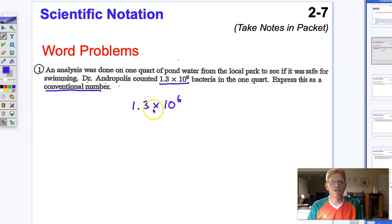So 1.3 × 10⁶. Now, you'll remember that's just expanding this out. Times 10 to the sixth would mean we move our decimal point over six spaces. So 1.3 becomes 1,300,000.